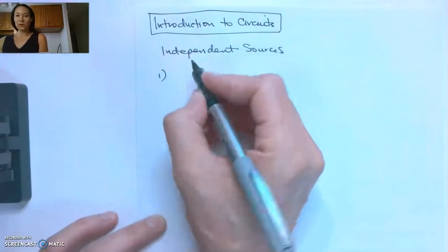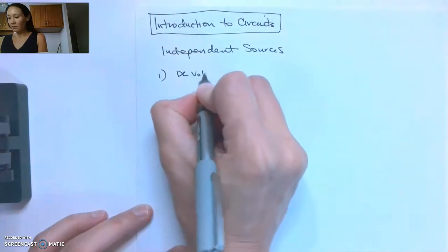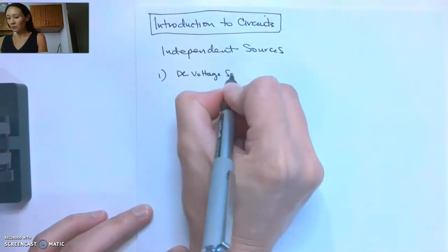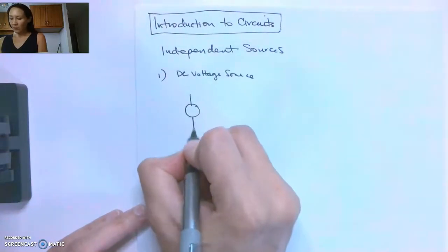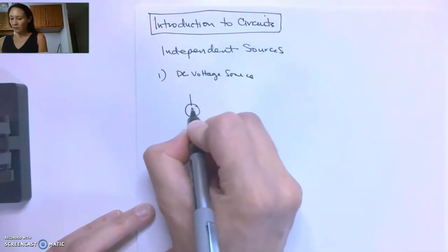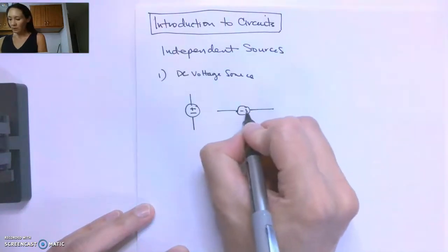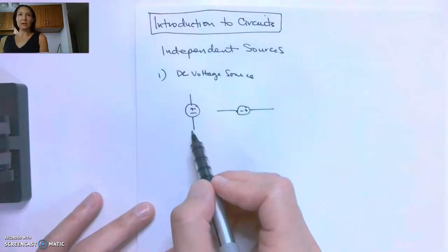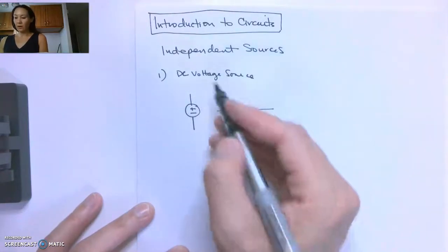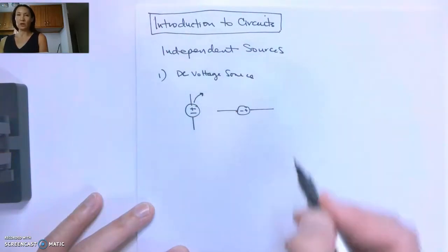So the first one looks like this. It's an independent DC voltage source. It can be in a vertical or horizontal orientation and it's going to have a positive and a negative side that tells you where the current originates. So it's going to start at this positive side and then flow in this direction.